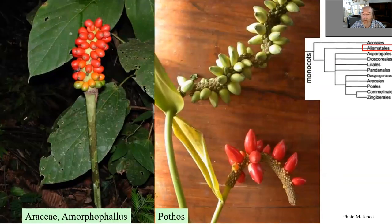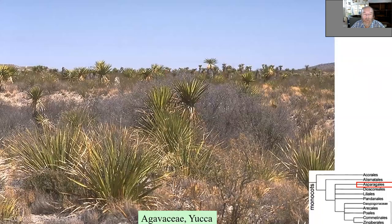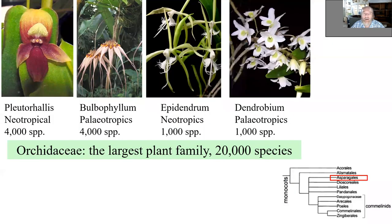Araceae — some examples here: Pothos and Amorphophallus. Agavaceae, Yucca — this used to be an important commercial plant. We will have a special lecture about tropical crops following this one, so I will leave that for the next one.